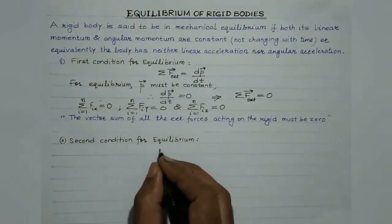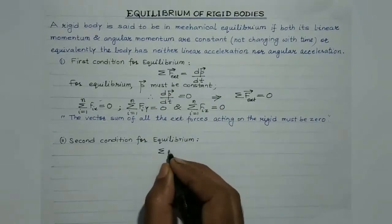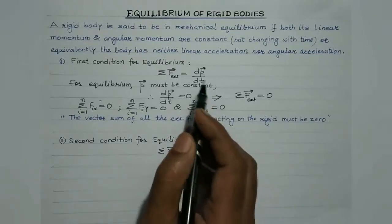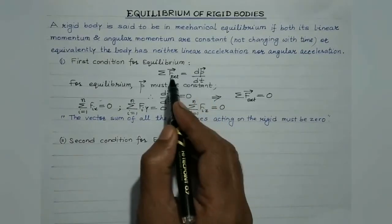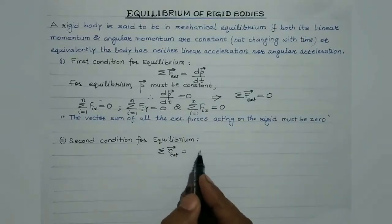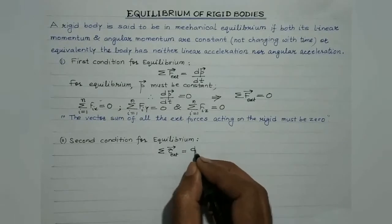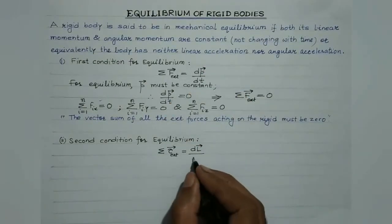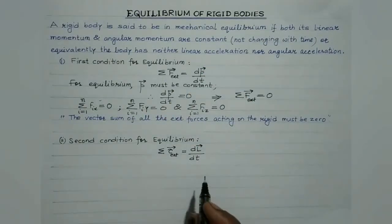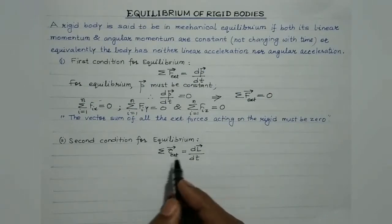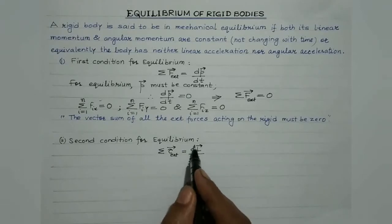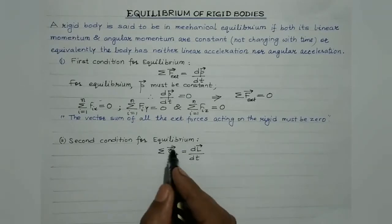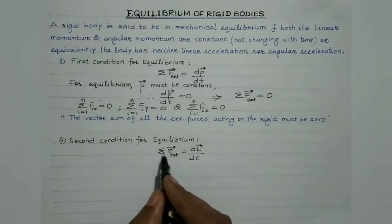The rotational motion of a rigid body is governed by the equation: net torque acting on the rigid body equals the time rate of change in its angular momentum. The summation of external torques represents the vector sum of all external torques acting on the rigid body.